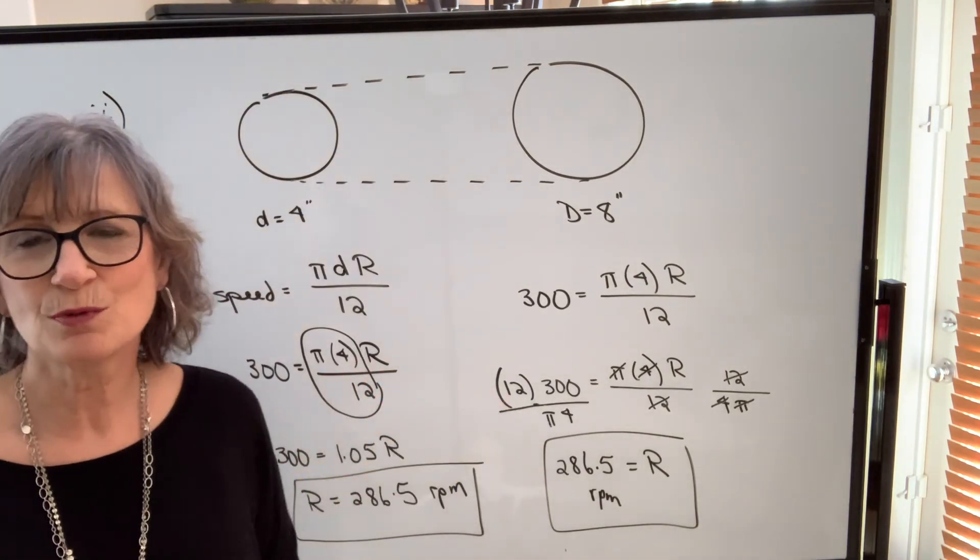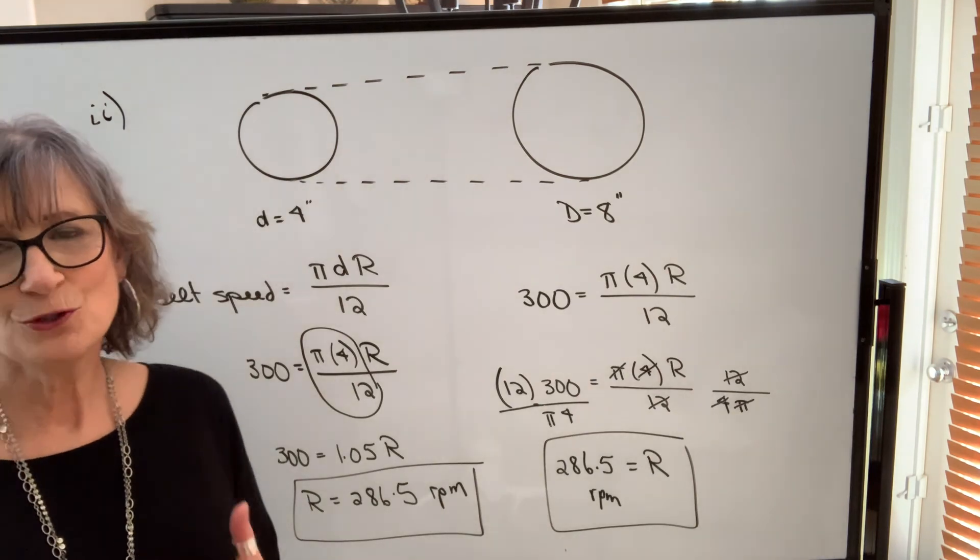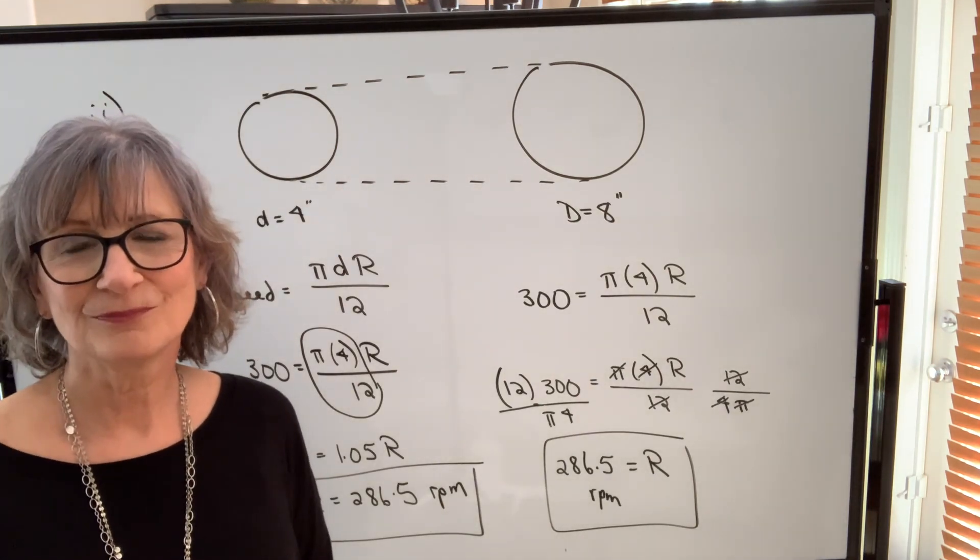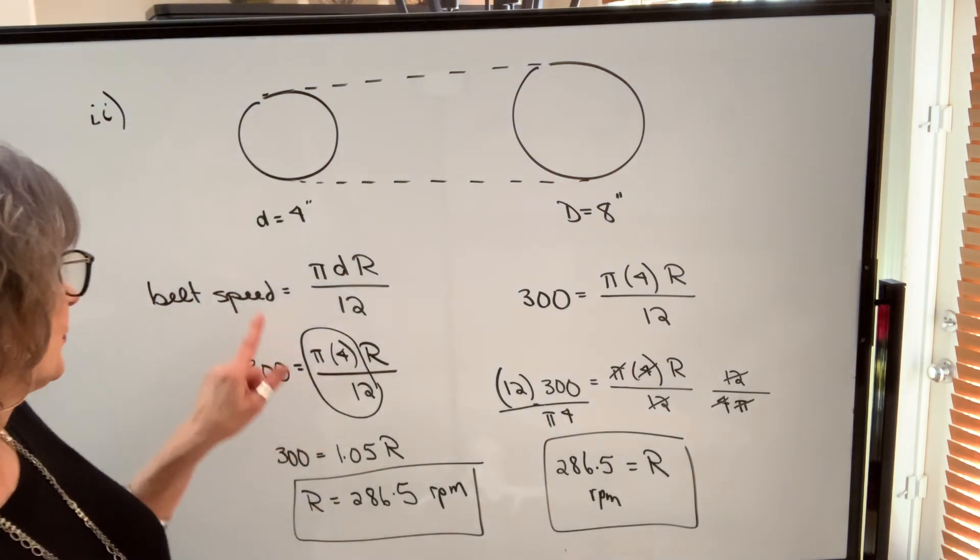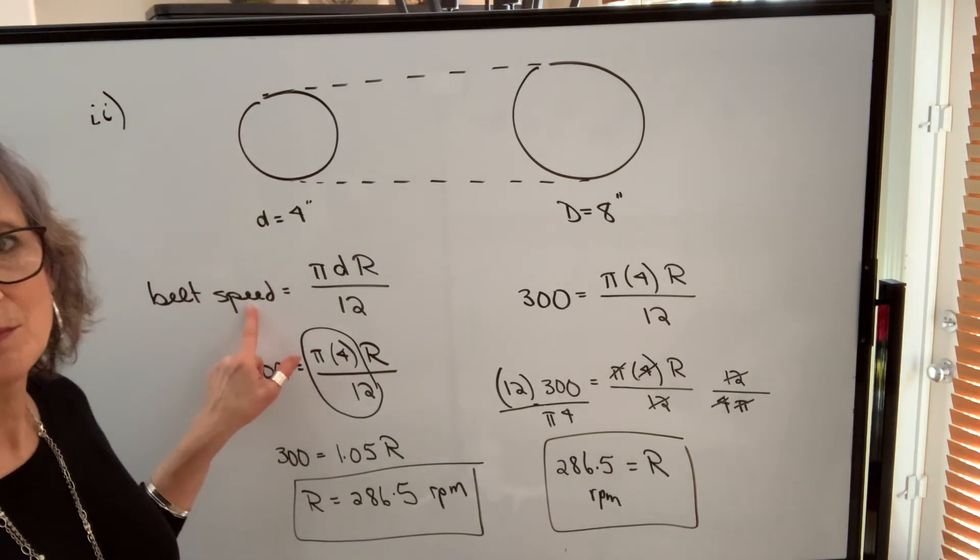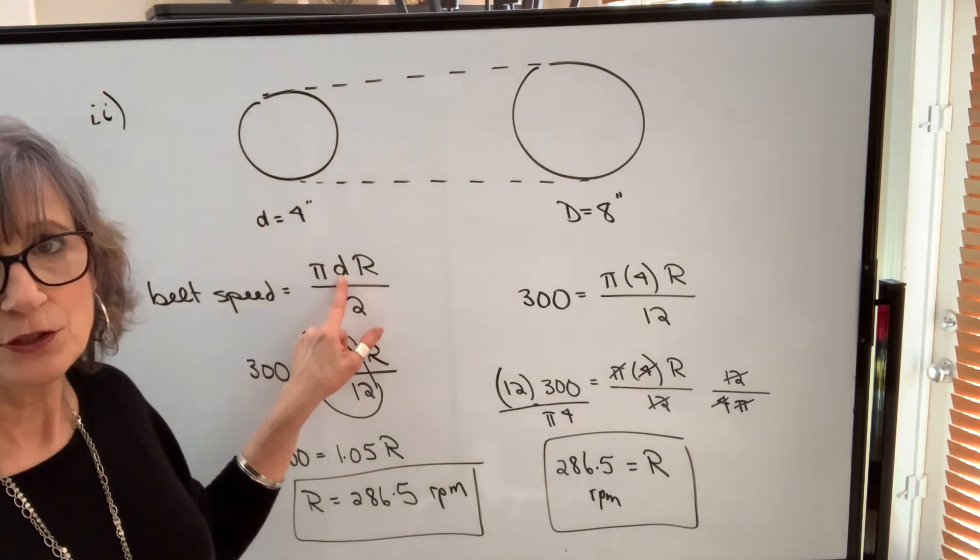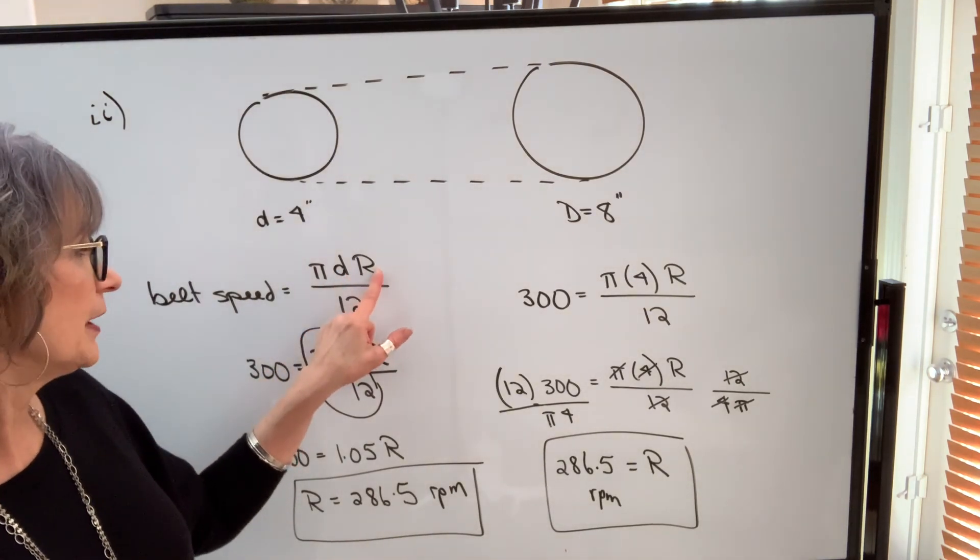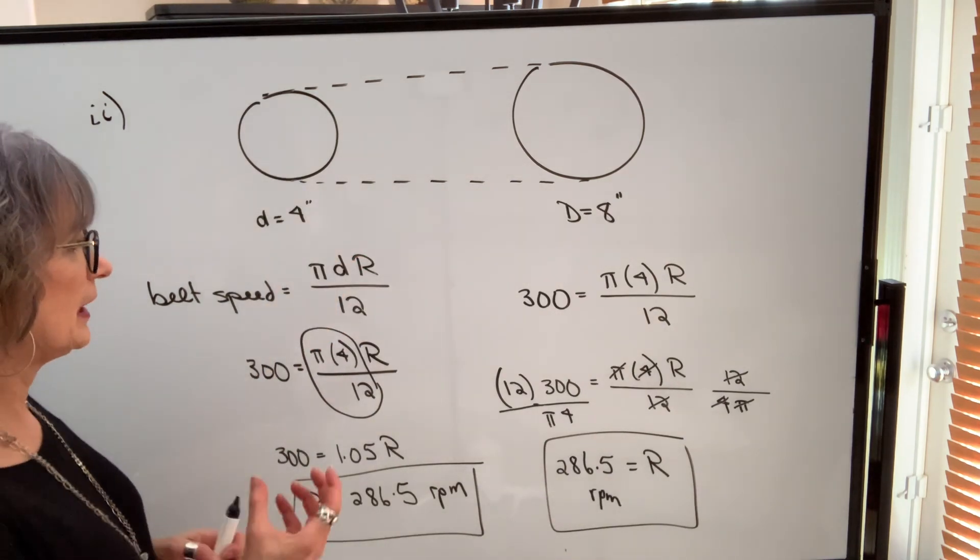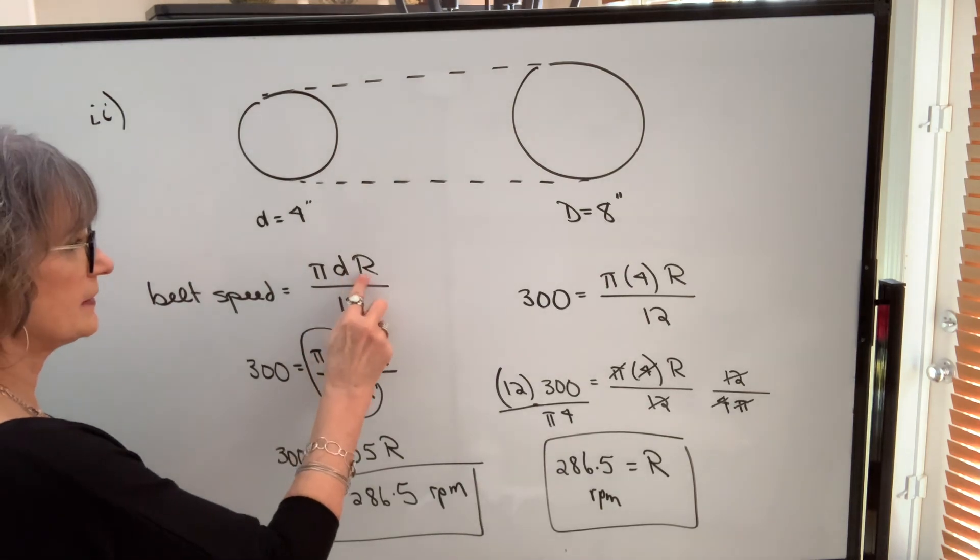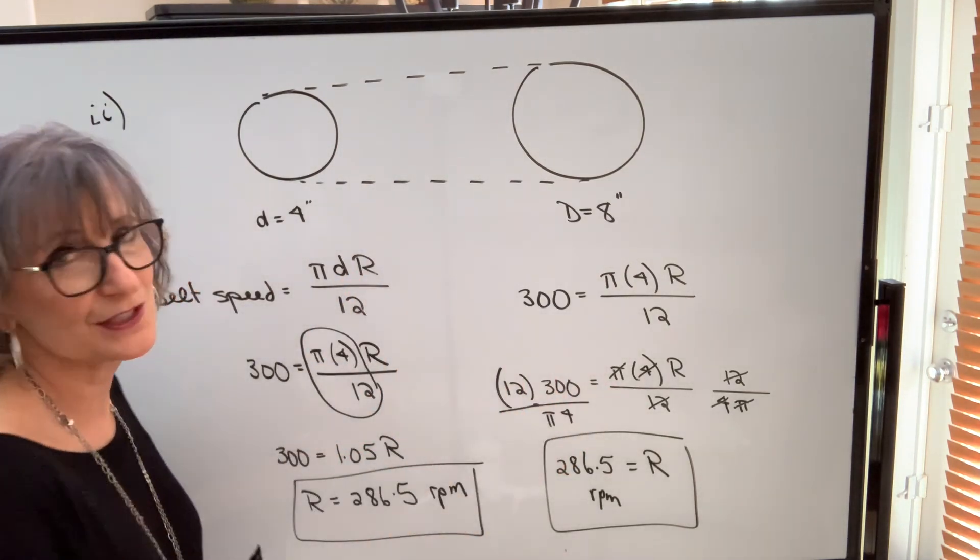One of these procedures is probably going to make more sense to you than the other. So you choose what you prefer. But understand how to find any value in your formula. Finding belt speed is going to be the easiest. You just take whichever pulley you choose, use its diameter and its RPM and punch into this formula. But if you know the belt speed and you know one of these, you should be able to find the other one by either of these procedures.